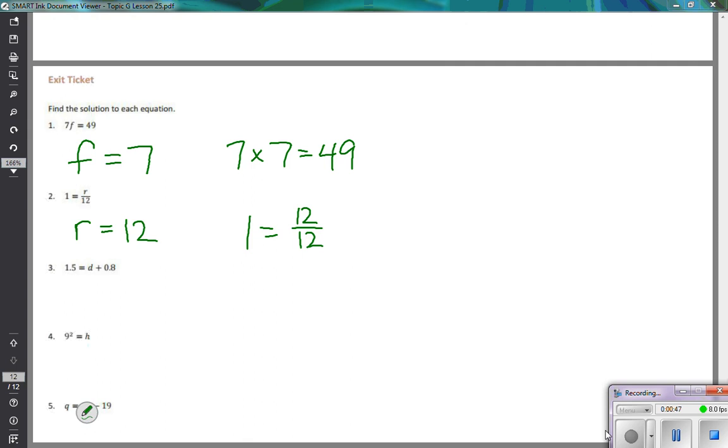The next one is 1.5 equals d plus 0.8. So we're working with decimals. If I ignored the decimals completely, I could just tell myself, all right, d plus 8 is 15. So I know, oh, it would be 7.